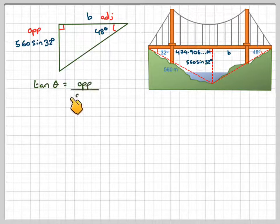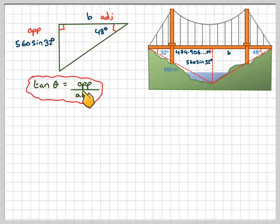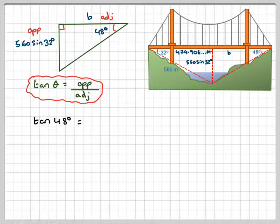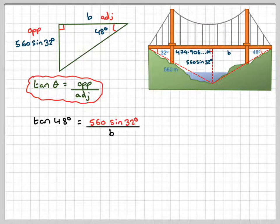So tan theta is opposite over adjacent, and therefore tan of 48 will be the opposite side, which will be 560 sine 32, divided by B.